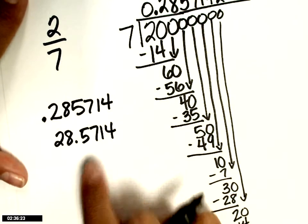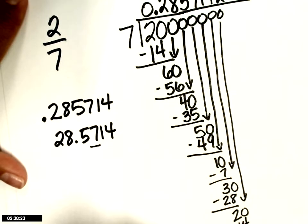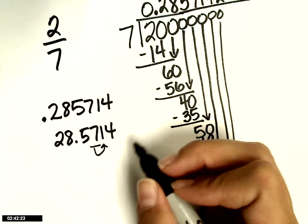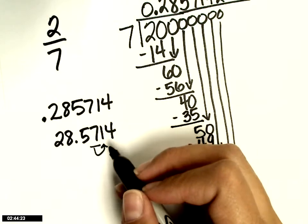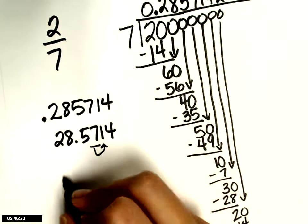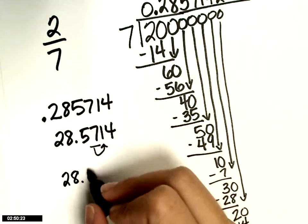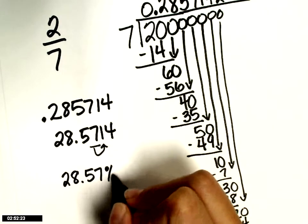And let's round. Rounding to the 100s. The 7 is my 100s place. I look to its right neighbor. 4 or less, let it rest. 5 or more, add 1 more. What am I going to do? 4 or less. So the 7 stays the same. And you add a percent sign.